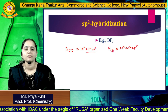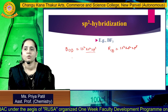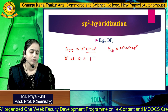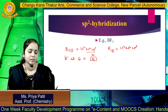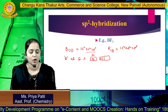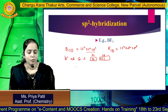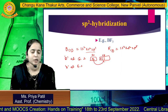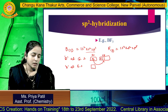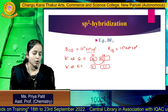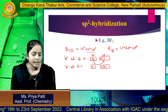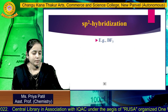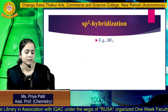The outermost electronic configuration for boron is 2S2, 2P1. We will take boron at ground state: 2 electrons in 2S orbital and 1 electron in the P orbital. When boron gets excited, 1 electron from the 2S orbital gets promoted to the 2P orbital, so you get 1 electron in the 2S orbital and 2 electrons in the 2P orbital.